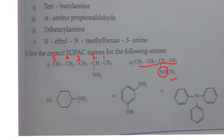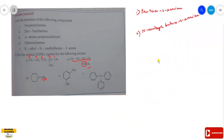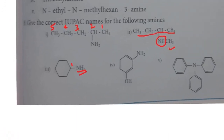The third amine is a primary amine with a cyclohexane ring. It has six carbons in a cyclic arrangement, so it is named cyclohexanamine.